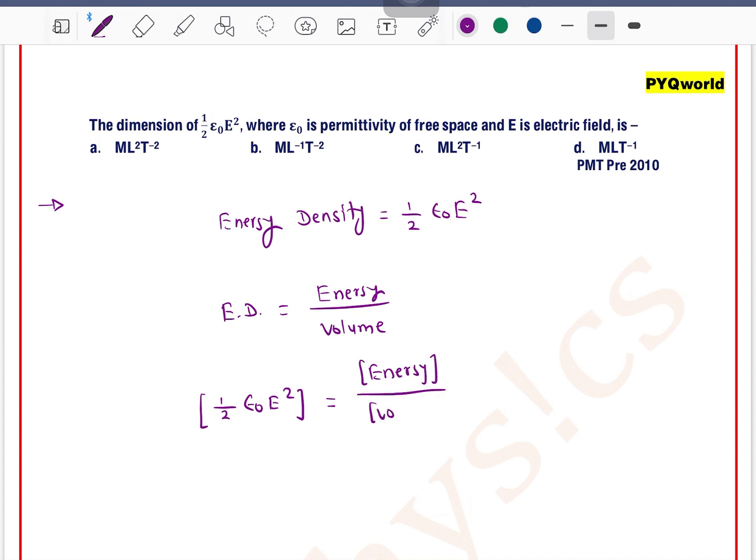So what is the dimension of energy? If we consider kinetic energy half m v square, this can be written as m1 l2 t minus 2. And what is the dimension of volume? L3.